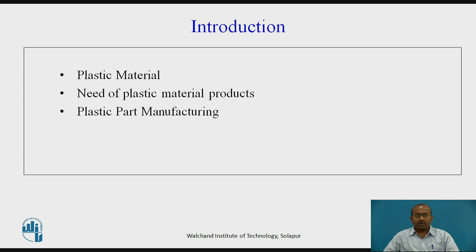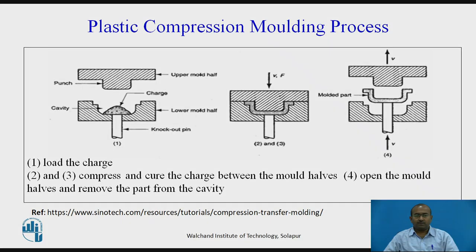Before proceeding with compression molding, let us see how the plastic part manufacturing process is selected. Parameters such as geometry and overall specifications of parts, required precision or accuracy, production rate, and quantity all affect the selection of the plastic part manufacturing method. Now let us proceed with the exact plastic compression molding process.